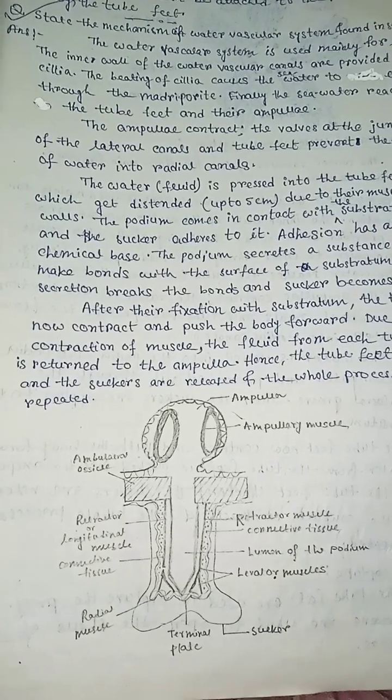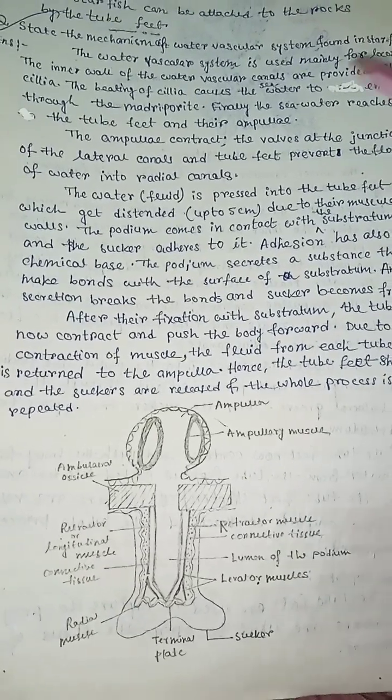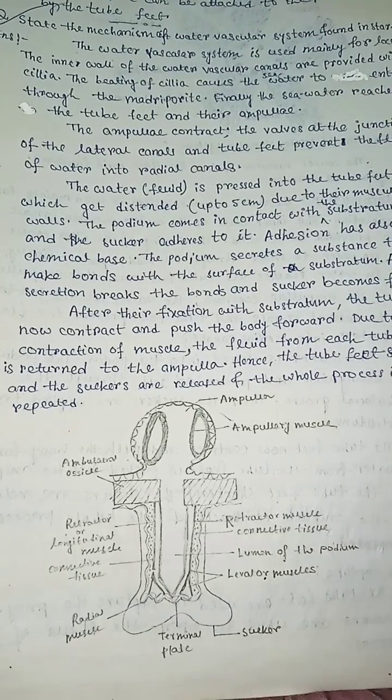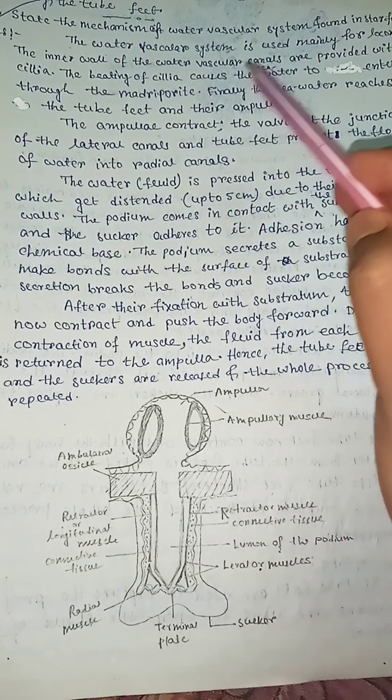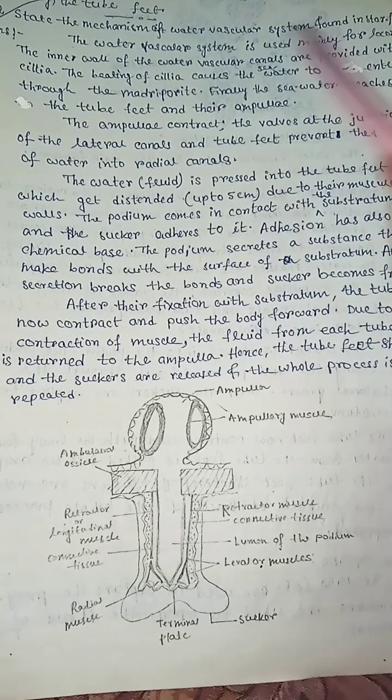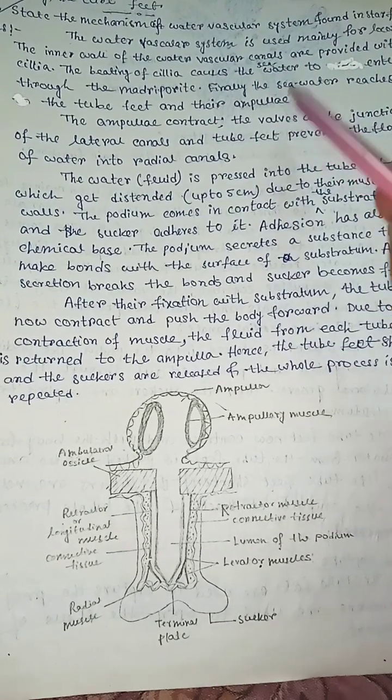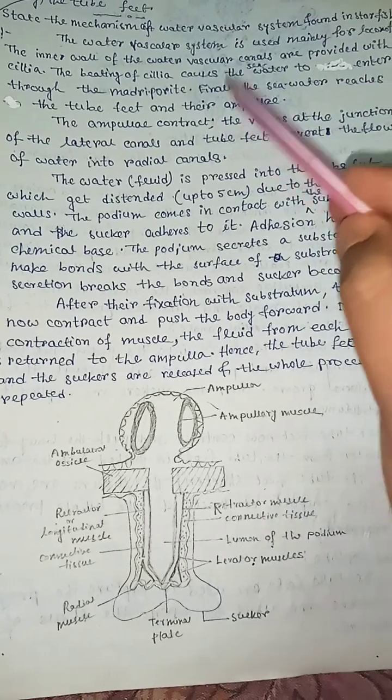Mechanism of water vascular system found in starfish. The water vascular system is used mainly for locomotion. The inner wall of the water vascular canals are provided with cilia. The beating of cilia causes the seawater to enter through the madreporite.